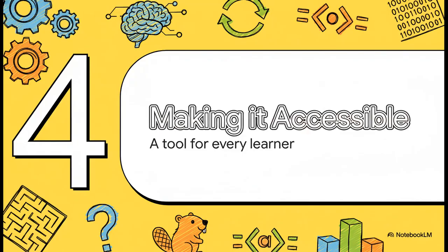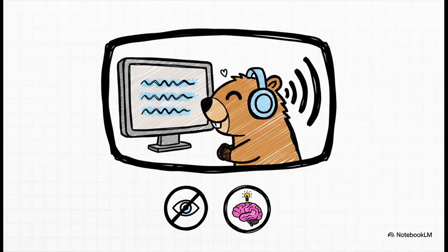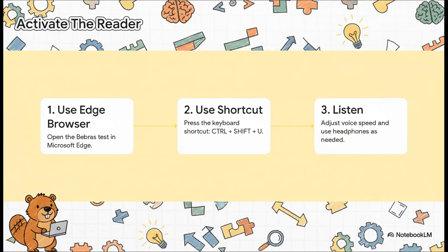Now, a challenge like this is only really great if everyone can take part. And that's why accessibility is such a huge focus, making sure that Bebras really is a tool for every single learner. One of the best features, hands down, is the built-in text-to-speech reader. This is a game changer. It means students who might struggle with reading, maybe because of dyslexia, or because English isn't their first language, are not at a disadvantage. It makes sure the test is measuring their thinking skills, not how fast they can read.